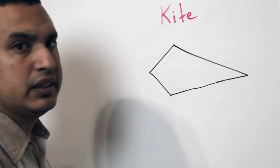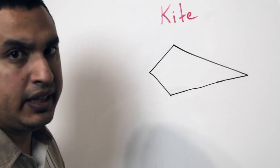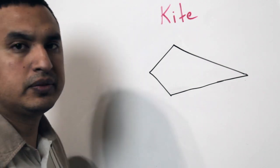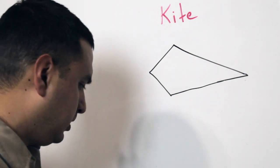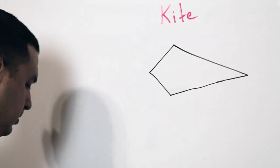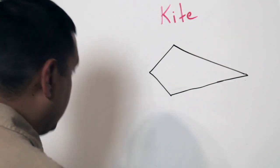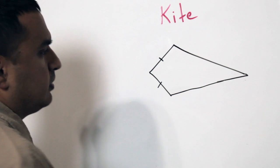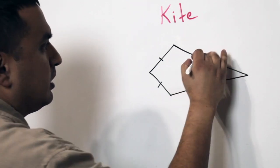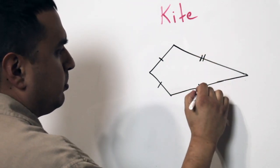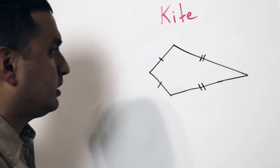Next what we're going to talk about is we're going to talk about a kite. Now a kite is a quadrilateral that has two pairs of congruent sides, but not all sides are congruent. So the way you know you have a kite is if you have that pair that's congruent and you know these other two pieces here are congruent. That's a kite.